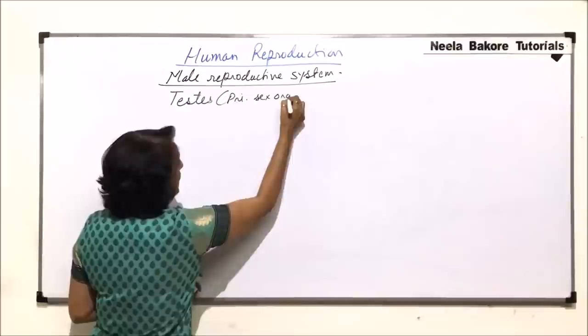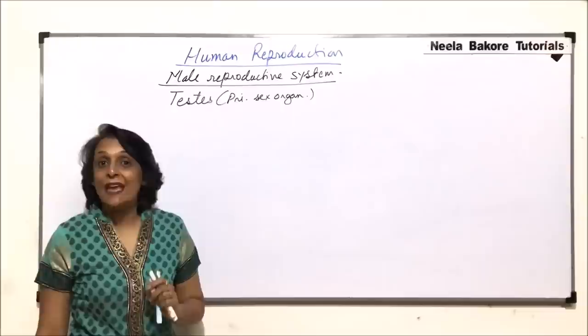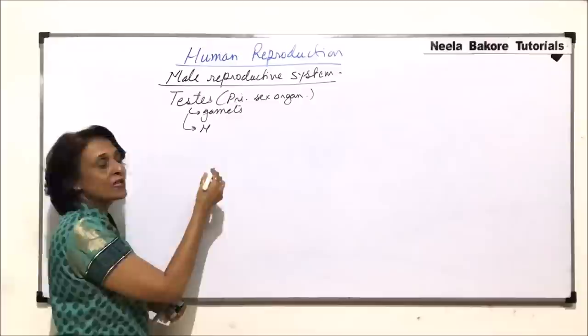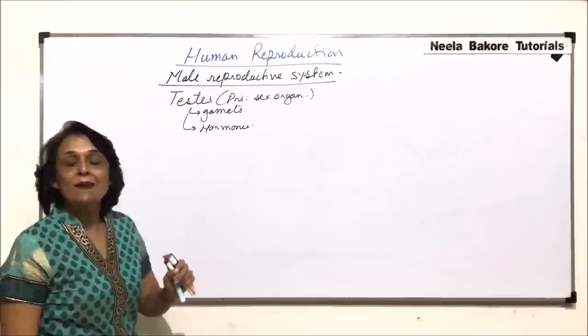The function of this primary sex organ is to produce gametes as well as hormones. So, it is going to produce the male gametes and the male sex hormones. These two functions are performed by the primary sex organ, that is, a pair of testes.